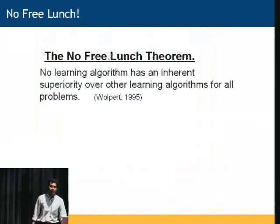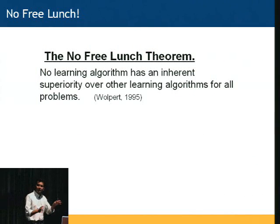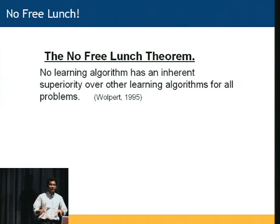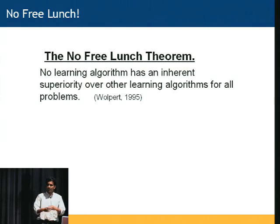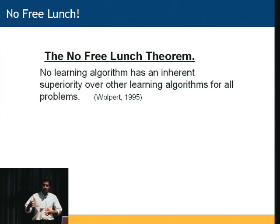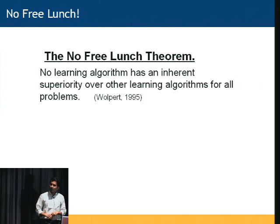But we run into a problem here — the no-free-lunch theorem. This is a theorem from the machine learning area, and it says that there is no one algorithm which can be used effectively to solve all kinds of problems. This is a fundamental result. But we see that in the cortex, at least we assume, the same algorithm is being used, and it seems to be getting used effectively — we are pretty good at vision, audition, speech, everything. So how do we resolve this paradox of seemingly one algorithm being used for everything, but the theorem says you can't use one algorithm for everything?